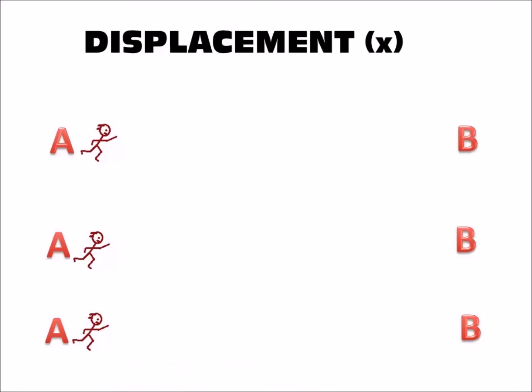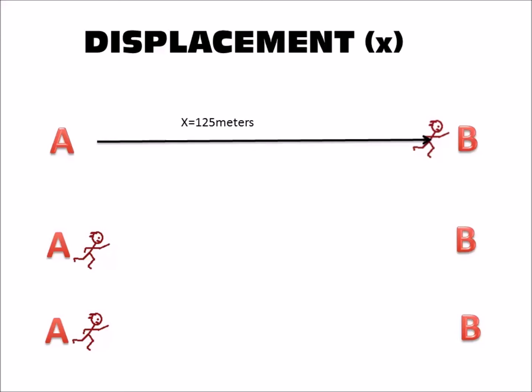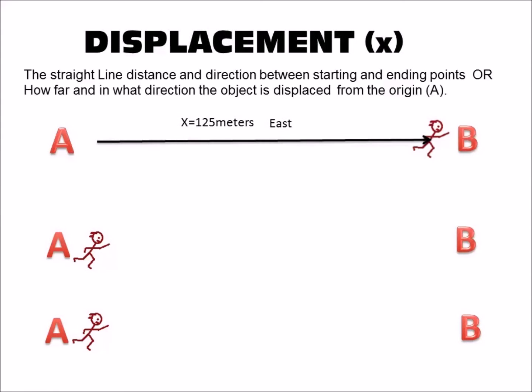Now let's talk about displacement. Here are our three runners again. The first runner runs from A to B in a straight line. His displacement is 125 meters east. Displacement is the straight line distance and direction between the starting and ending points — or how far and in what direction the object is displaced from the origin, which is A.